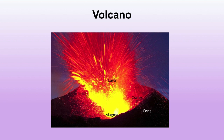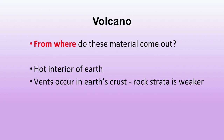Magma comes out in the form of lava; a funnel-shaped feature called a crater is created at the opening, and when the material gets deposited outside it forms a cone. The molten material comes from the hot interior of the earth. A vent occurs wherever rock strata is weaker — wherever there is a weakness, an opening or vent is created and from there the molten material comes out.